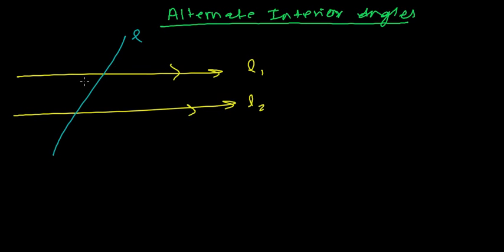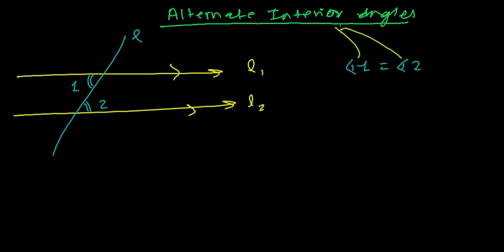At that time, the alternate angles — this is an alternate angle with this one — let's say this is angle 1 and this is angle 2. Then angle 1 will be equal to angle 2, and these are called alternate interior angles, or in short, alternate angles. Alternate interior angles are always equal, keep in mind.